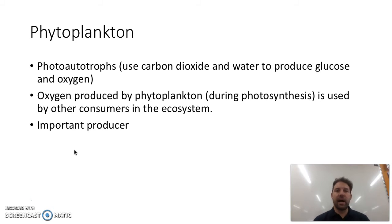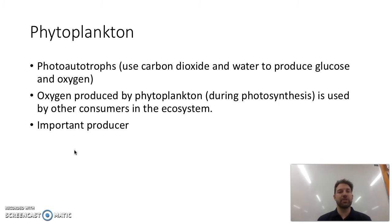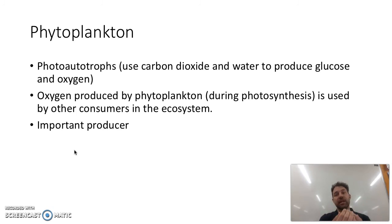Phytoplankton are photoautotrophs and they're really important producers within ecosystems. They use carbon dioxide and water to produce glucose and oxygen through photosynthesis. So they're removing carbon dioxide and producing oxygen, which really benefits the other consumers in the ecosystem.